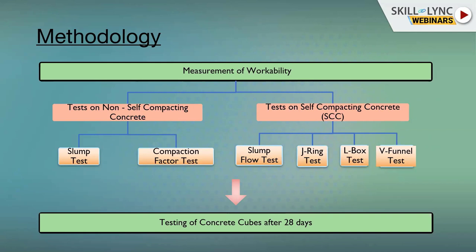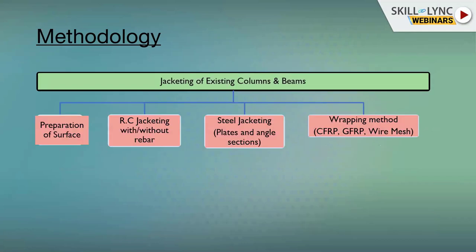Workability tests for self-compacting concrete include the slump flow test, J-ring test, L-box test, and V-funnel test. These tests check the workability of fresh concrete. When ordering concrete from a ready-mix plant, these tests are performed before delivery to the client. Once material collection and testing are complete, the jacketing process begins with surface preparation.